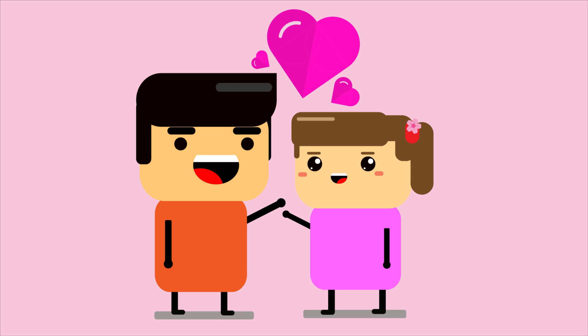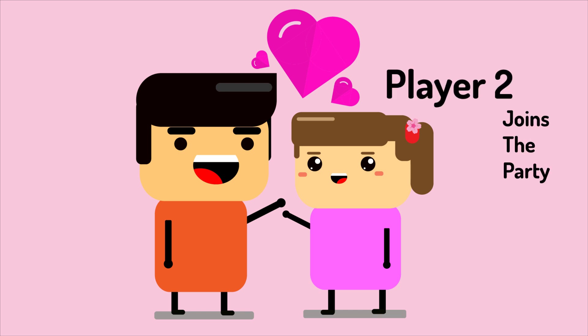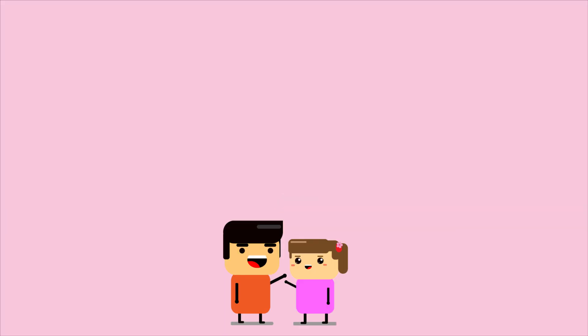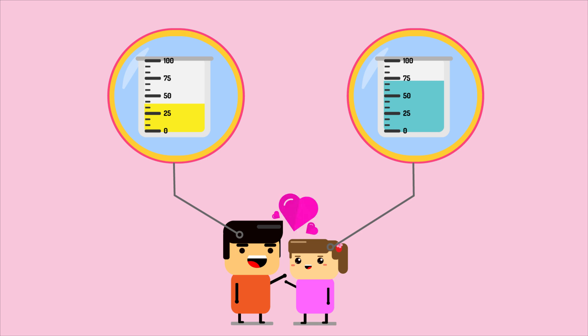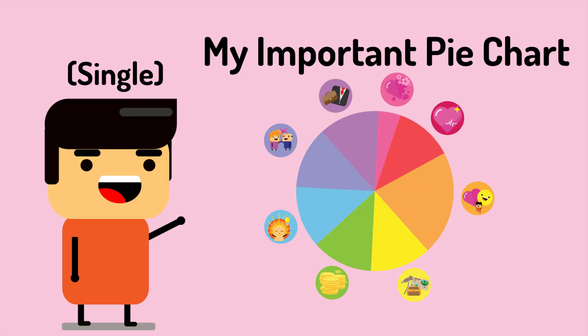And with that, let's talk about relationship — aka player 2 — insecurity. In terms of a relationship, it becomes a little more complicated. Once in a relationship, all the different securities from our solo player buckets work together with our partner's security buckets.